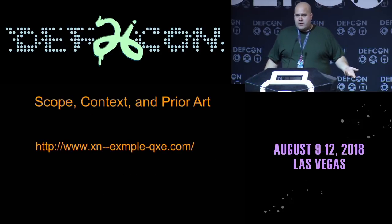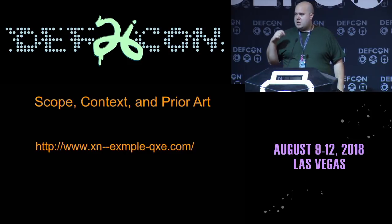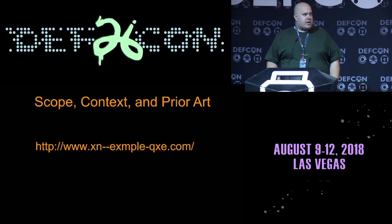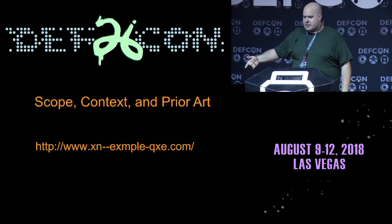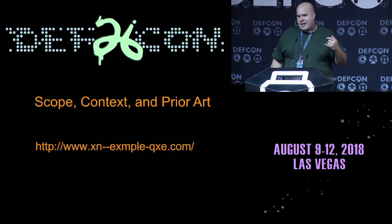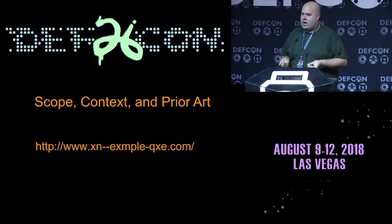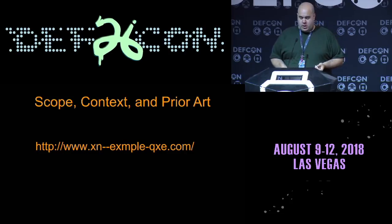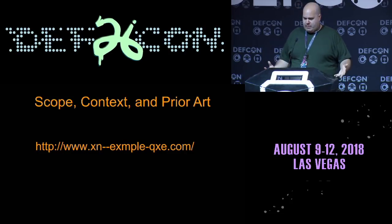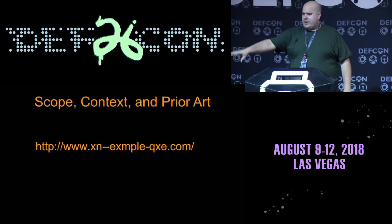Most of the homograph attacks that we've seen have been in URLs — you use a character that renders the same to trick a user into clicking on a site and going somewhere they didn't intend. That's mostly handled by using what's called Punycode. So this is a case where 'example.com' has been changed to 'EX lowercase Greek alpha MPLE.' If you put that into your browser, it shows you you're not going where you thought you were. This is the most common threat vector, and this is what your browser will do. So I am not doing this — I am doing everything else but this.